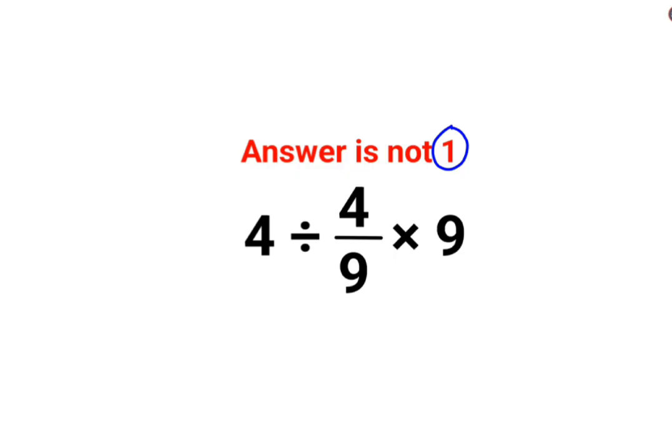Now here a lot of people think that this and this gets cancelled, so you are left with 4 divided by 4. The answer is 9. No, that's not how these things work.